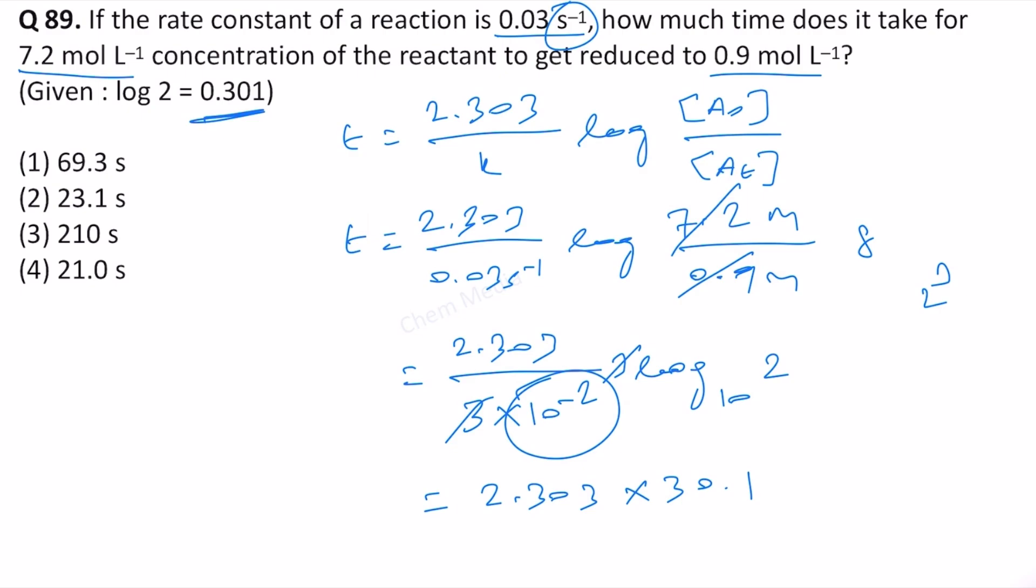So 30.1 times 2 itself will be 60.2, and then 0.303 times 30 that will be 9.09. Therefore, this is approximately 69.3 seconds. This means option 1 is correct.